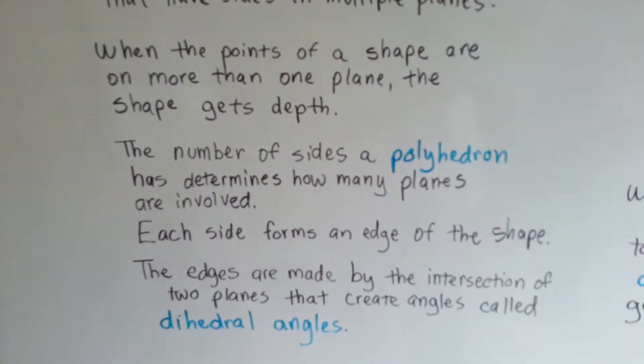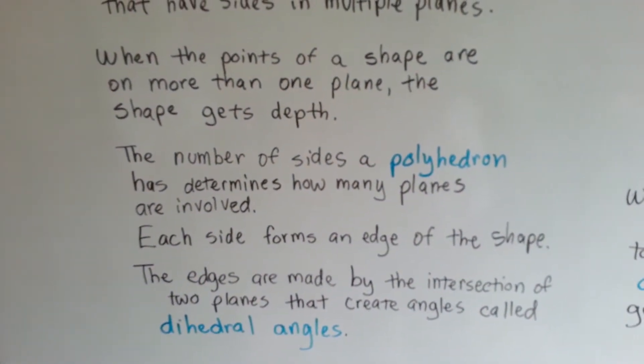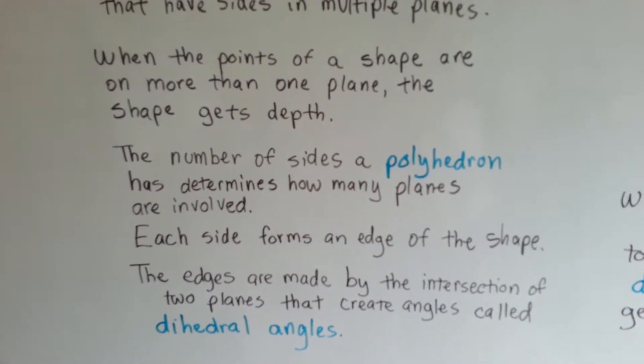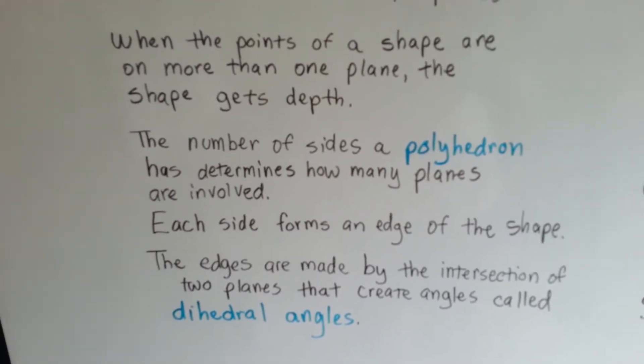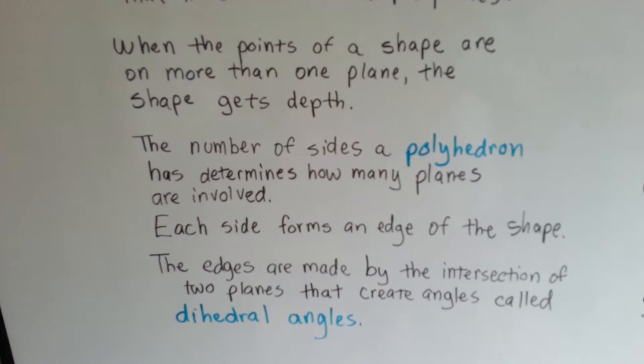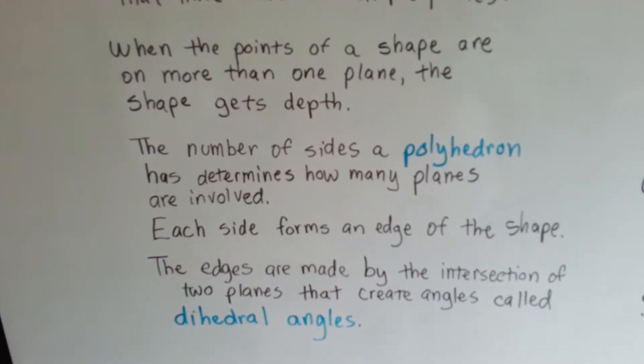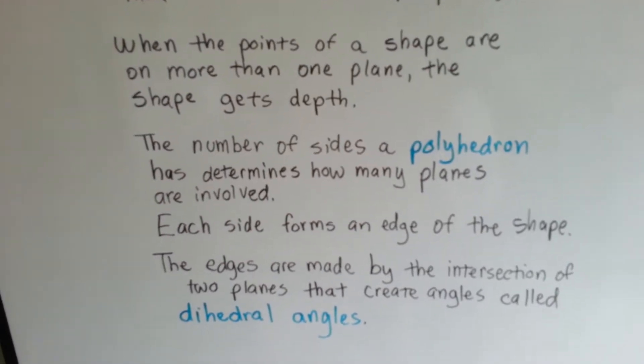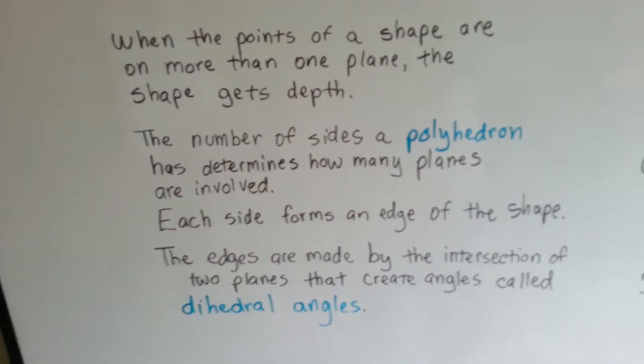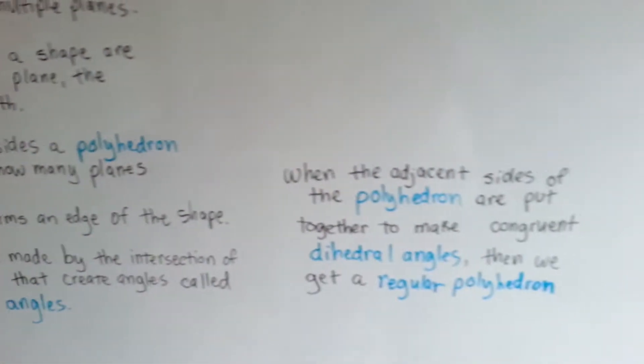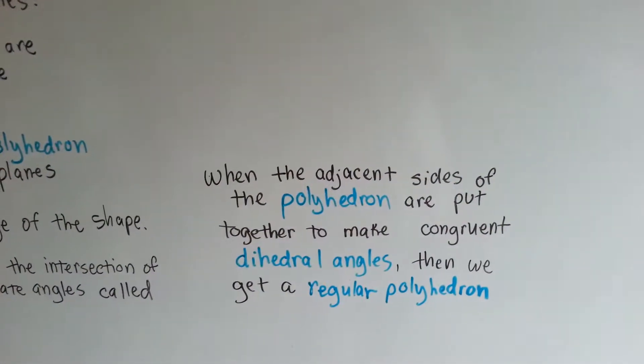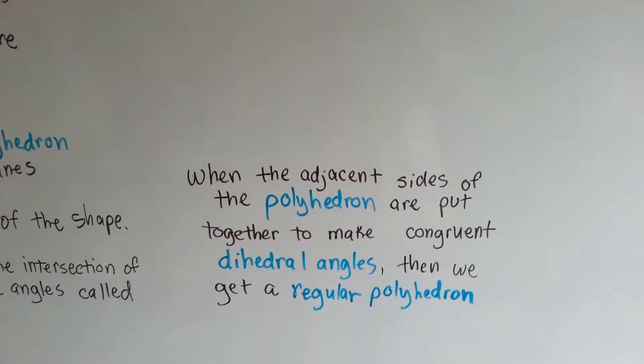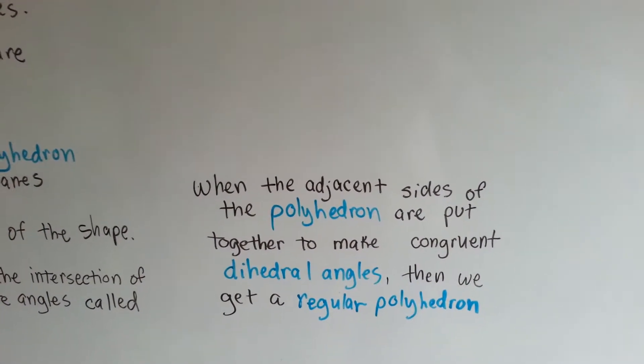The number of sides a polyhedron has determines how many planes are involved. Each side forms an edge of the shape. The edges are made by the intersection of two planes that create angles called dihedral angles. When the adjacent sides of the polyhedron are put together to make congruent dihedral angles, then we get a regular polyhedron.